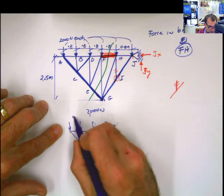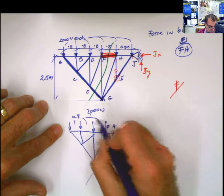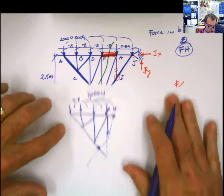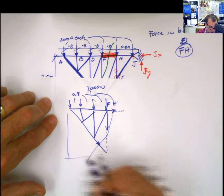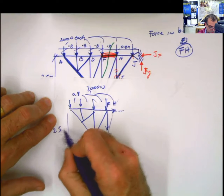These distances are 0.8. You have them there. Well, not here, somewhere here. And the total height here up to this point is 2.5 meters.